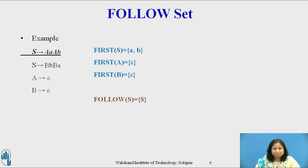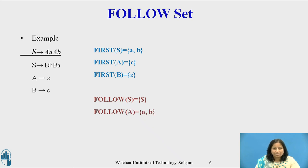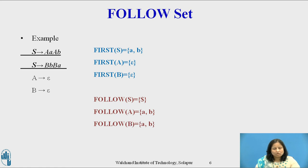To compute follow of A, consider the production S derives A a A b. By applying Rule 2, first of 'a' and first of 'b' will be in the follow of A. Hence, follow(A) equals {a, b}. Similarly, follow(B) equals {a, b}.